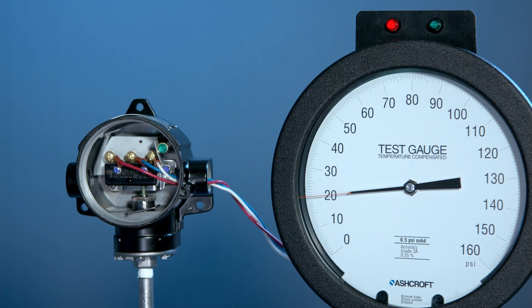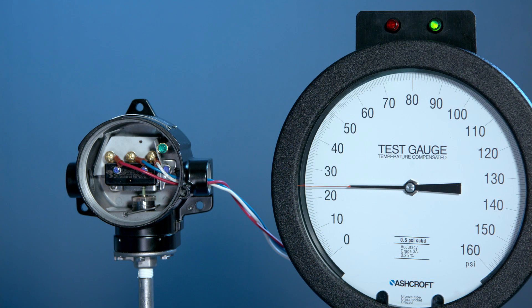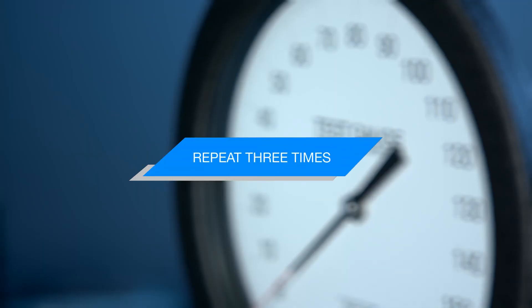And from here, we would check our dead band by increasing the pressure to see where it turns back on again. That looks like about 3.5 PSI dead band at 23.5. We would repeat this, taking it to full scale and down to 20, and back up again three times to verify repeatability of the switch.